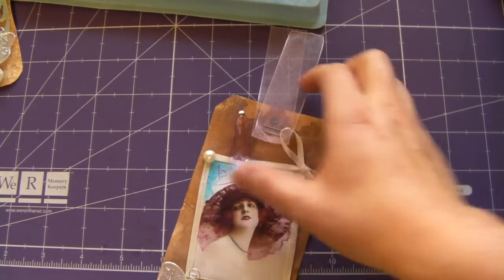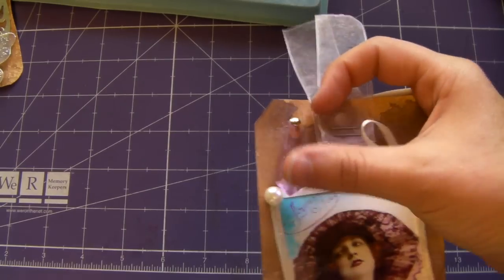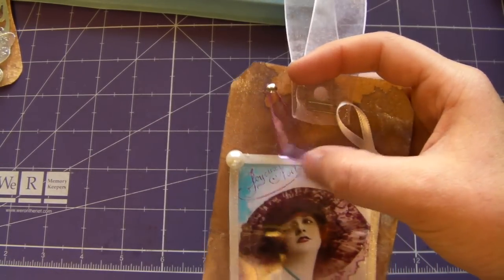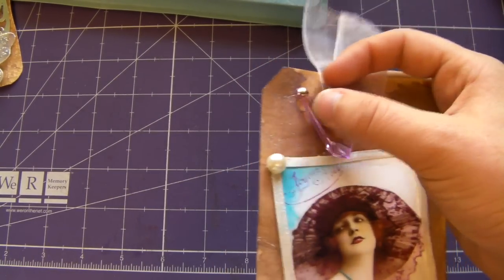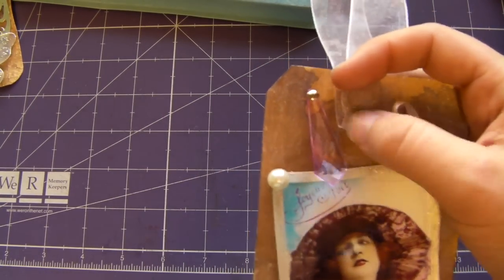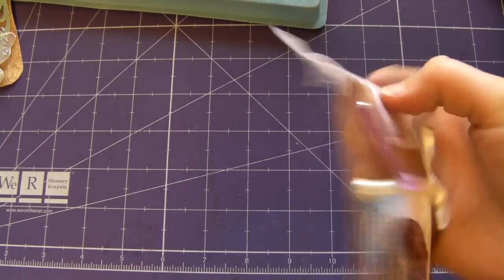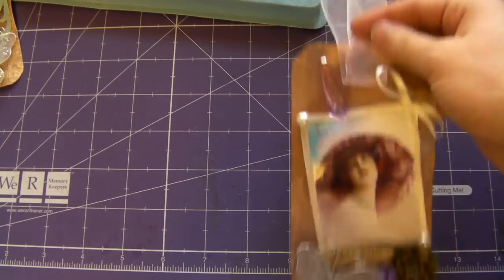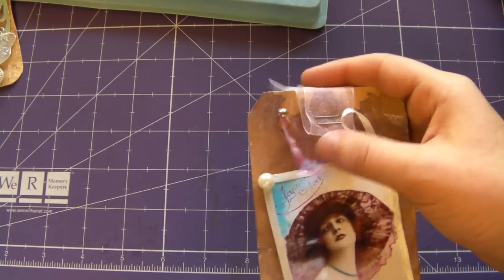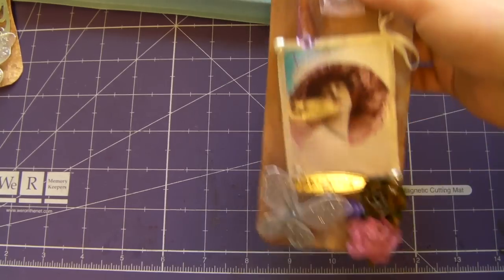Then I added a little charm that I got from my ballerina dress form. I took them all off and I'm making them into charms. So instead of just having it hanging, I put a little brad through and it just swivels. So I like that. I think it's cute.